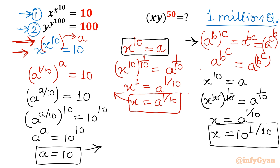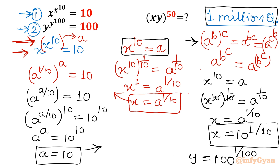Or you can write it as the 10th root of 10. Remember, this is a 1 million question — we'll explain why shortly. Now for the second equation: y^(y^100) = 100. Following the same pattern, substitute y^100 = B and solve similarly. In place of 10 we have 100, so the result is y = 100^(1/100).